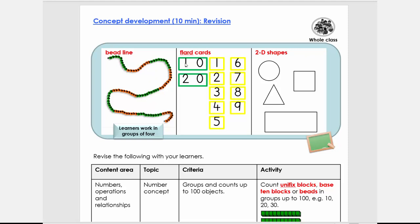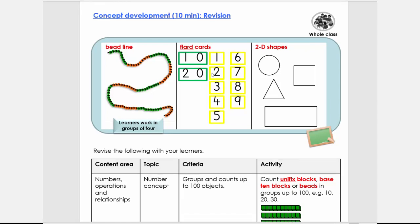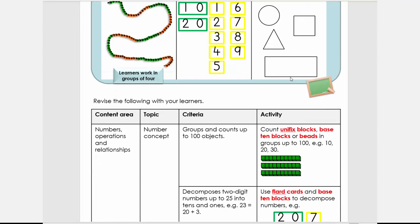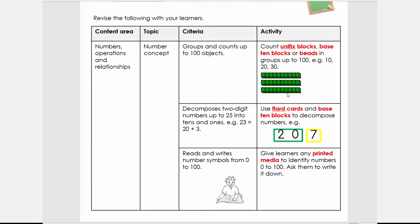We have our flat cards where we place the unit cards on the tens card to make the reading of numbers easier because we work in the decimal system. Then we're going to look at 2D shapes. Just to give you an overview, we're going to count a variety of objects that we've already done.